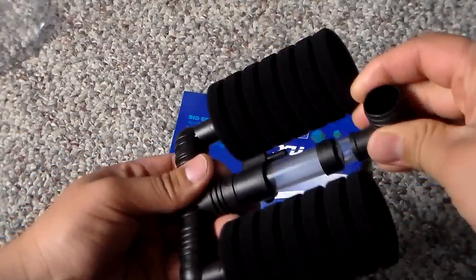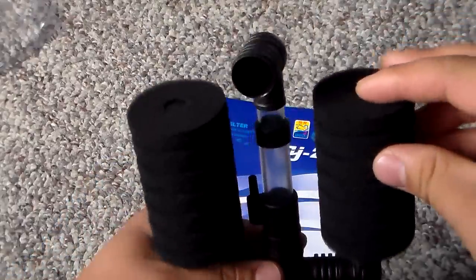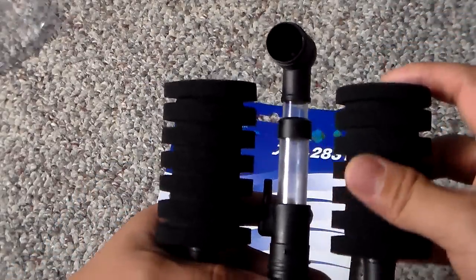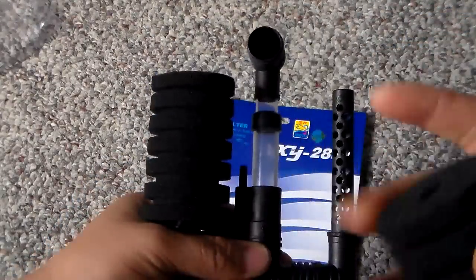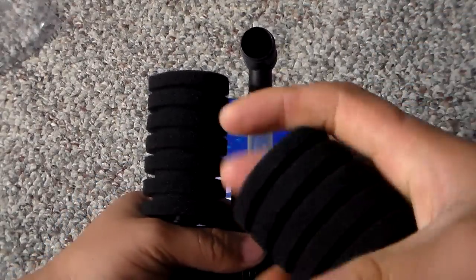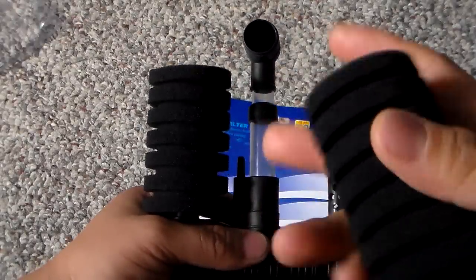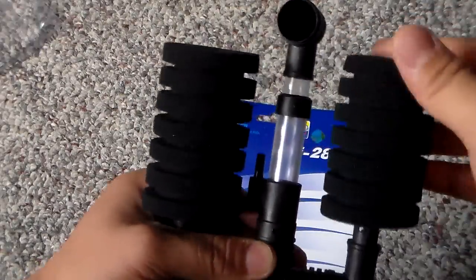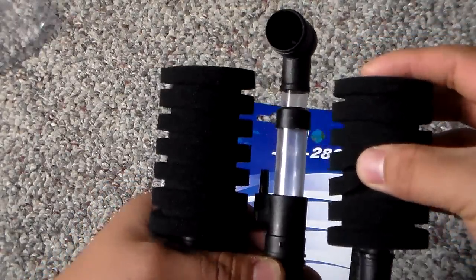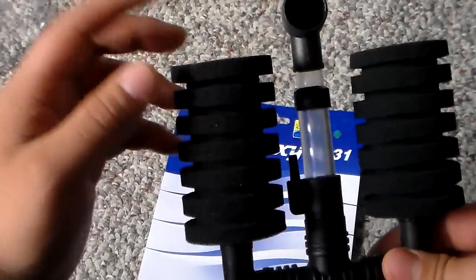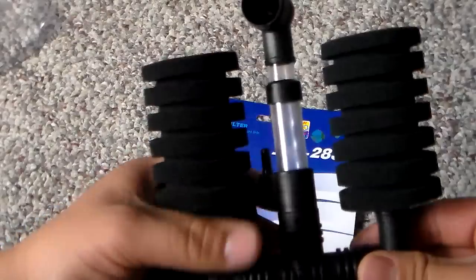And one unique thing about this is that if you were to clean one sponge filter here, you know, once you clean it with tank water and put it back in, you can wait a while until you clean this other one here. So you can wait a couple weeks until you clean this other one here so you don't lose your bacteria.